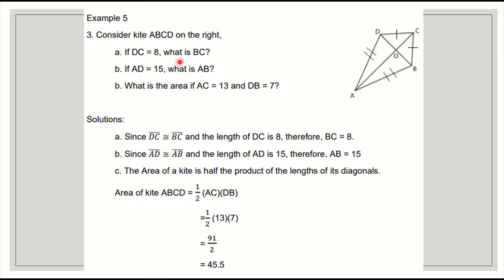Consider kite ABCD on the right. This is the kite. If DC is 8, what is the measure of this? Of course, 8 as well, because they are congruent. If AD is 15, what is AB? Of course, 15 also, because they are congruent.